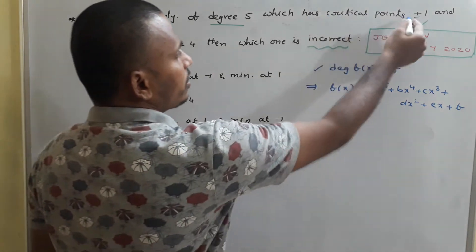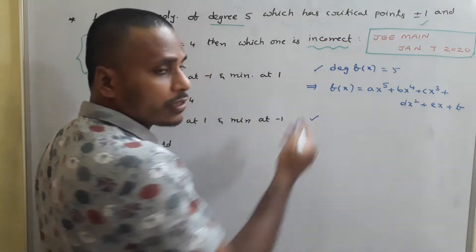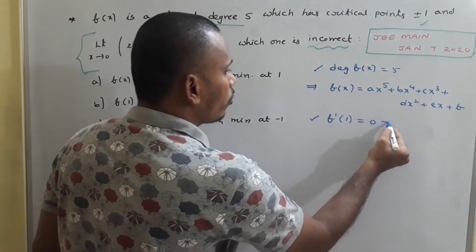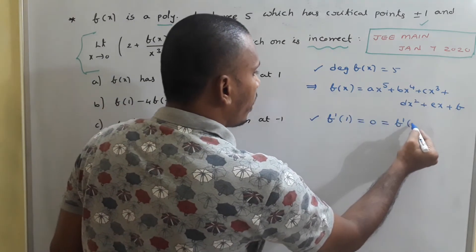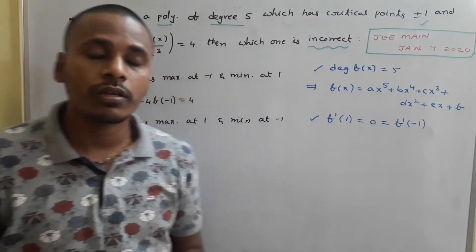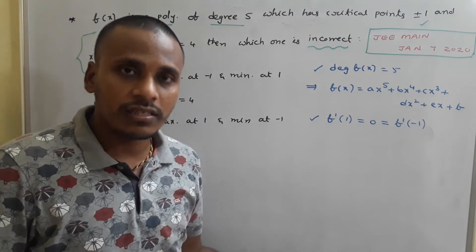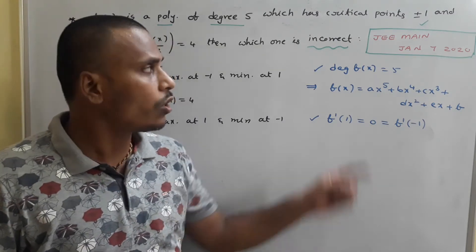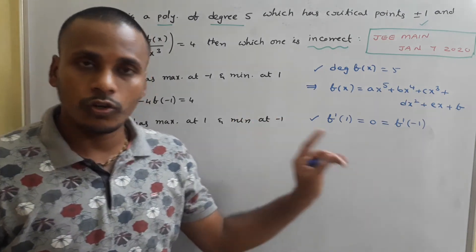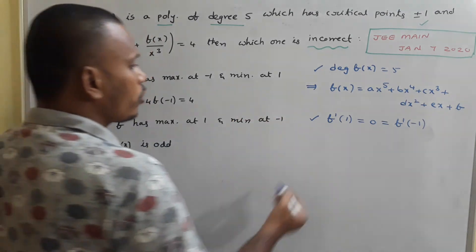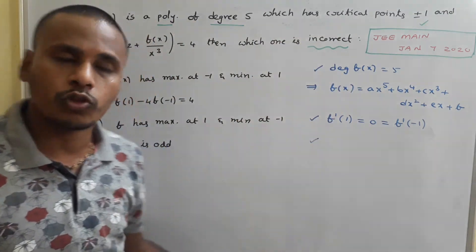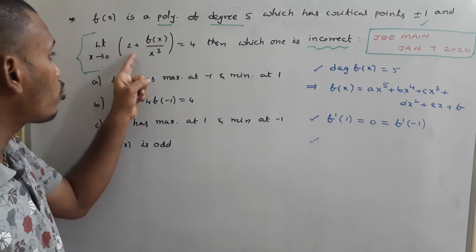The condition that the critical points are ±1 generates f'(1) = 0 and f'(−1) = 0, since critical points exist where f'(x) = 0. The third condition we need to use is the limit: as x tends to 0, [2 + f(x)/x³] = 4.